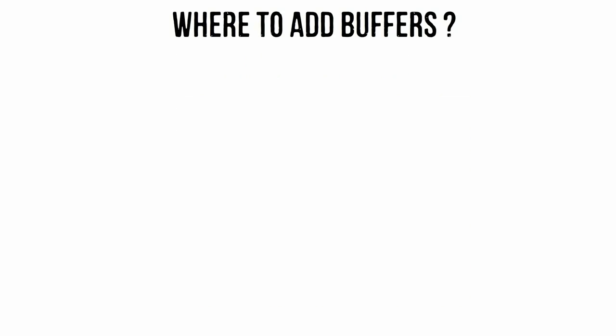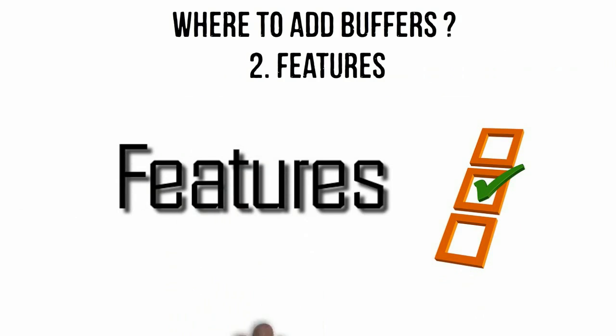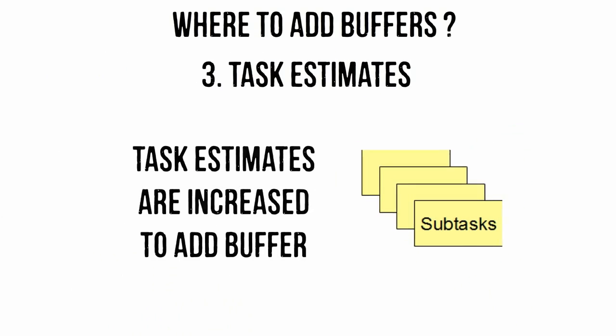2. Features, usually estimated in story points, are estimated higher where there is uncertainty. 3. Task estimates, usually estimated in hours up to no more than a day, are usually increased to allow for known impediments.